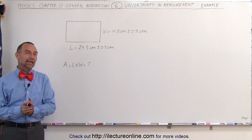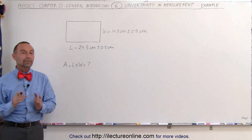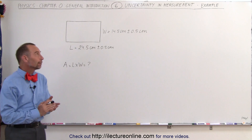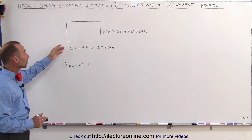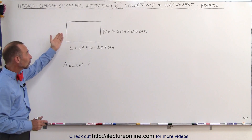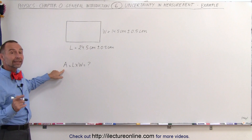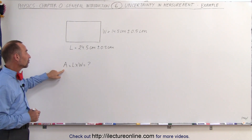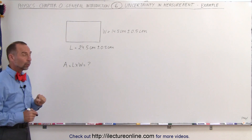Welcome to our lecture online. In order to understand uncertainties a little bit better, let's go through this example right here. Let's say we're trying to measure this object — it has a length and a width — and we're then trying to calculate the area of that particular object by simply multiplying the length times the width.